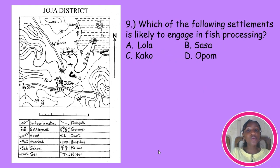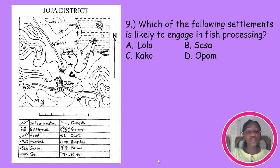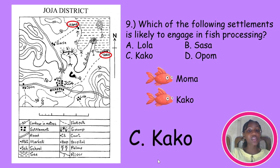Which of the following settlements is likely to engage in fish processing? We are asked about fishing again. We established that coastal fishing takes place closest to the sea, the northeastern part of the map. For you to process fish, first you have to catch them. So the towns engaging in fishing will be those close to the sea, which are Moma and Kaku. The one present in the options is Kaku, option C.